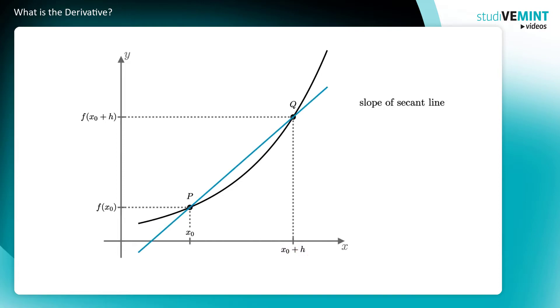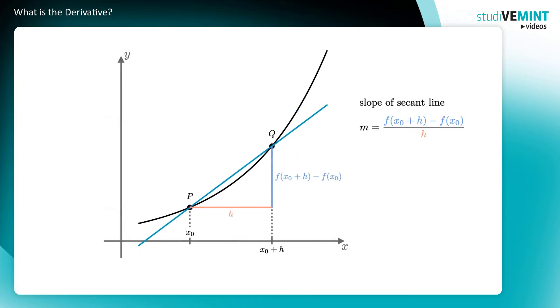The slope of the secant line between p and q is still computed with the slope triangle. The slope m is the vertical change, that is f(x₀ + h) minus f(x₀), divided by the horizontal change, h. The formula for the slope of the secant line remains the same even if you choose a point closer to p.